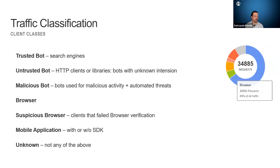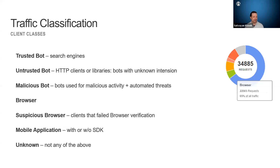Here is how we classify. We have trusted bots — untrusted bots. Generally trusted bots are going to be search engine bots. There'll be different categories and you can move signatures between categories. You can also create your own custom signatures and custom categories, and place those signatures in either an existing or a custom category. Then obviously we have untrusted bots — these are things we don't know. It could be a Python script, an HTTP library, things of that nature. We have known malicious bots and automated threats. We have browsers. We also have suspicious browsers — these are browsers that don't meet all the criteria of being a known browser but don't meet all the criteria of being a known bad browser. Then we have mobile applications with or without the SDK. And if it doesn't fit any of that, we have unknown.